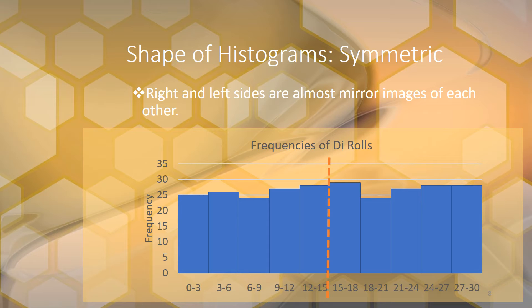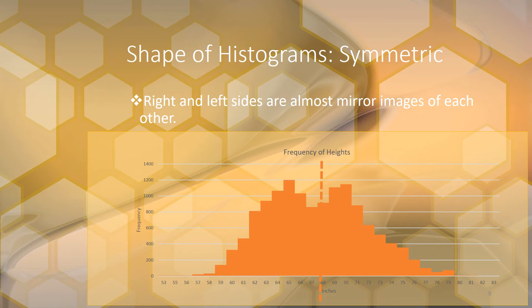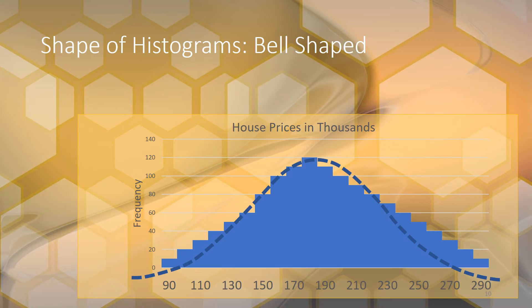A uniform distribution is also symmetric, and sometimes a bimodal histogram is symmetric too — though it doesn't always have to be, since the peaks could be in different positions. A bell-shaped histogram is one where the peak is in the middle and it tapers off equally on both sides, looking like a mound.